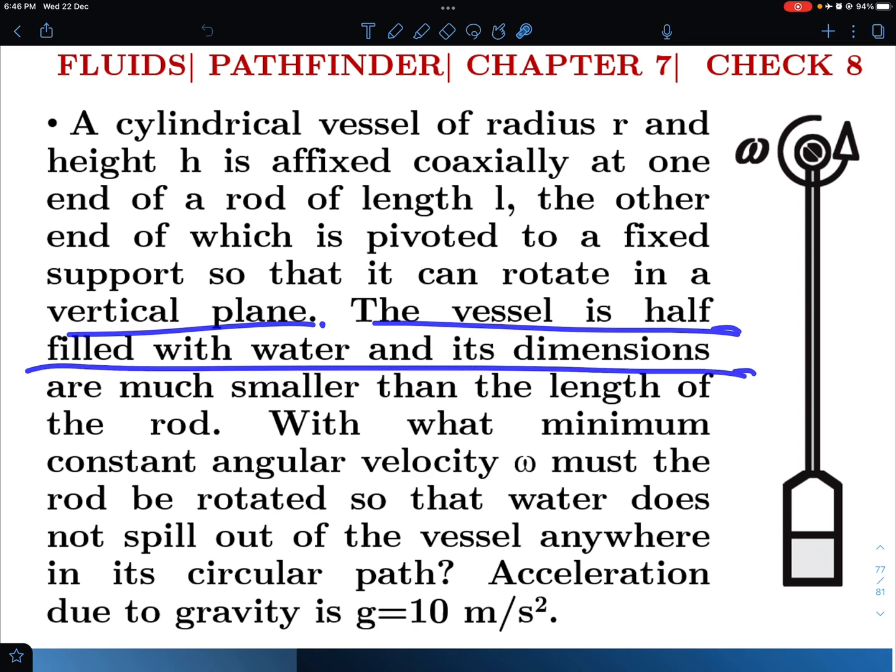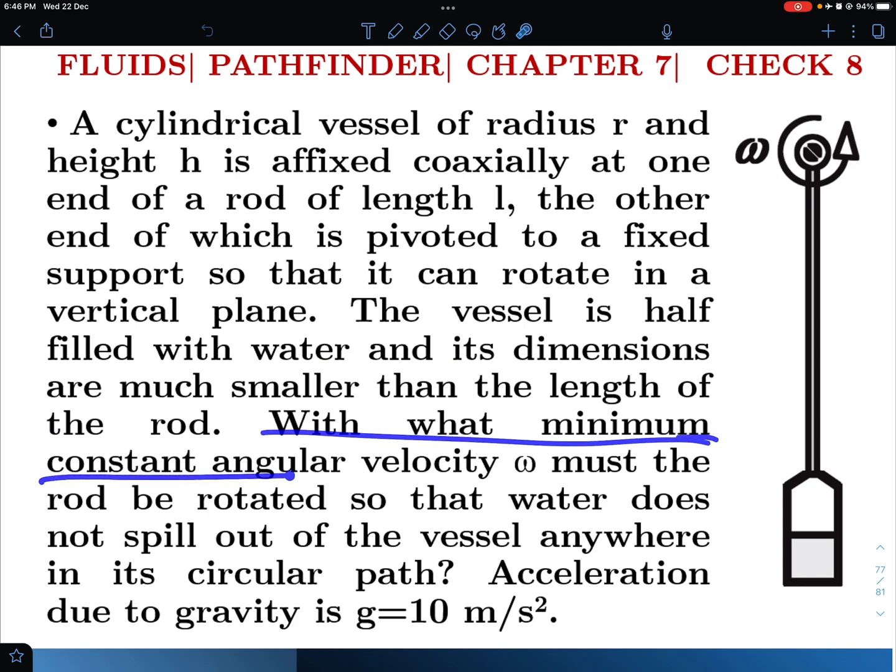The vessel is half filled with water and its dimensions are much smaller than the length of the rod. With what minimum constant angular velocity omega must the rod be rotated so that water does not spill out of the vessel anywhere in its circular path.